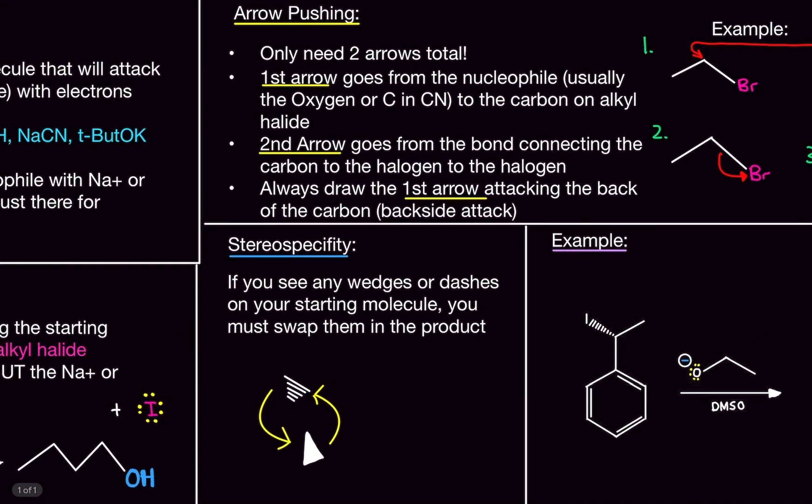Now, stereospecificity. If you see any wedges or dashes on your starting molecule, you must swap them in the product. For example, in your starting molecule, if you had a wedge or a dash, you will swap them in the product. So, wedges become dashes, and dashes will become wedges in the product.